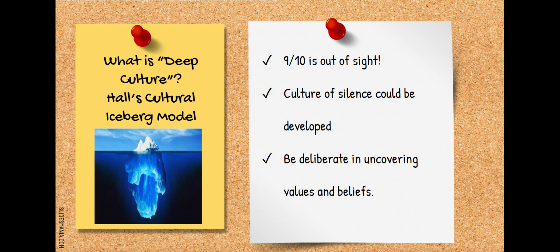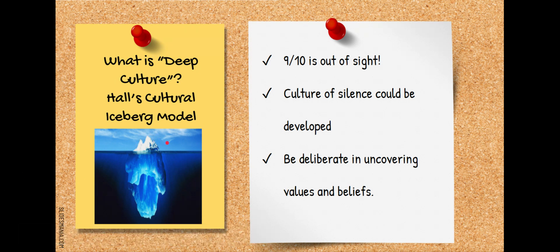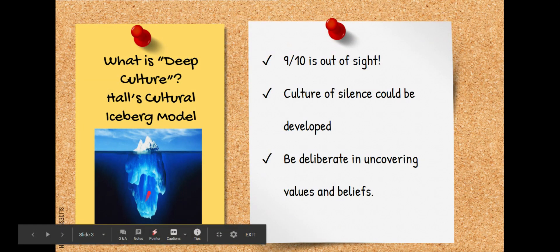First, let's talk about what deep culture is. According to Hall's cultural iceberg model, when we look at a person, we only see about one-tenth of who that person is. Just like when we look at an iceberg, we only see one-tenth or the tip of the iceberg. That other nine-tenths is out of sight.